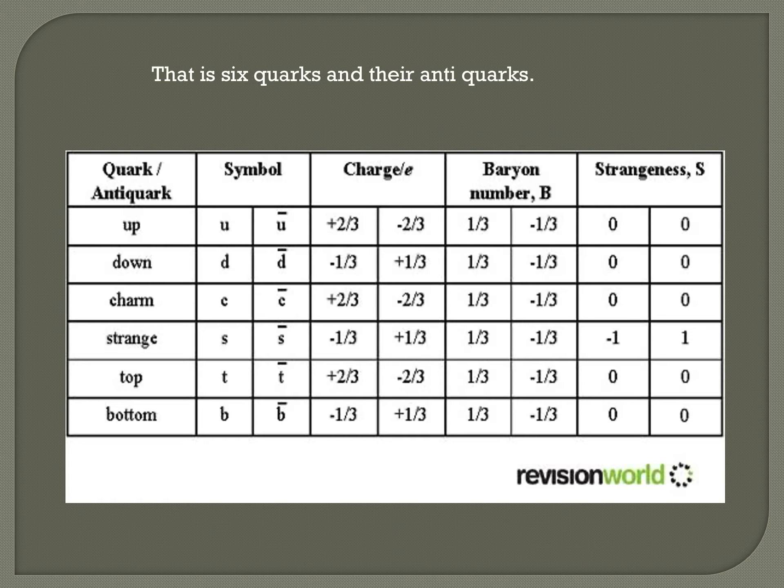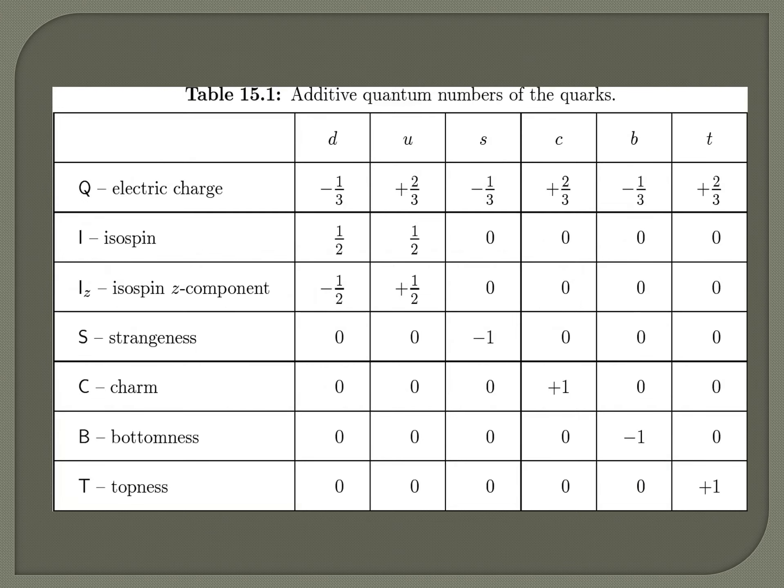Each baryon is made up of 3 quarks, and each anti-baryon is made up of 3 anti-quarks. Mesons are made up of a quark and an anti-quark pair, and their spin is equal to 1/2.